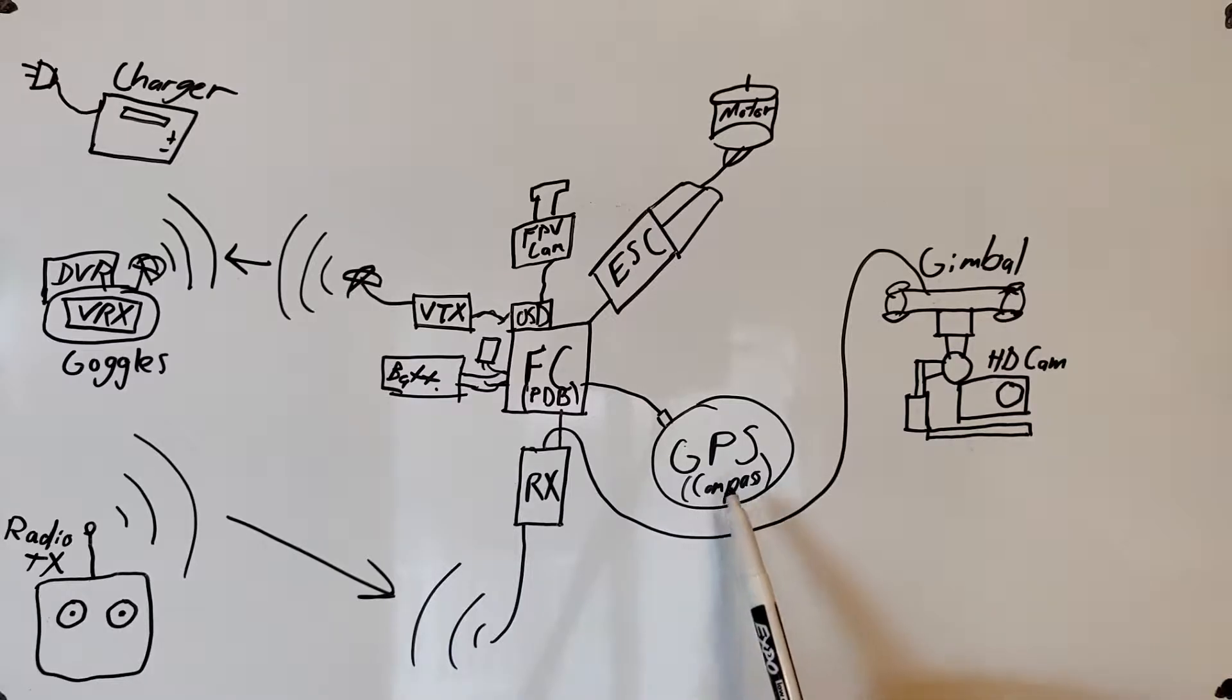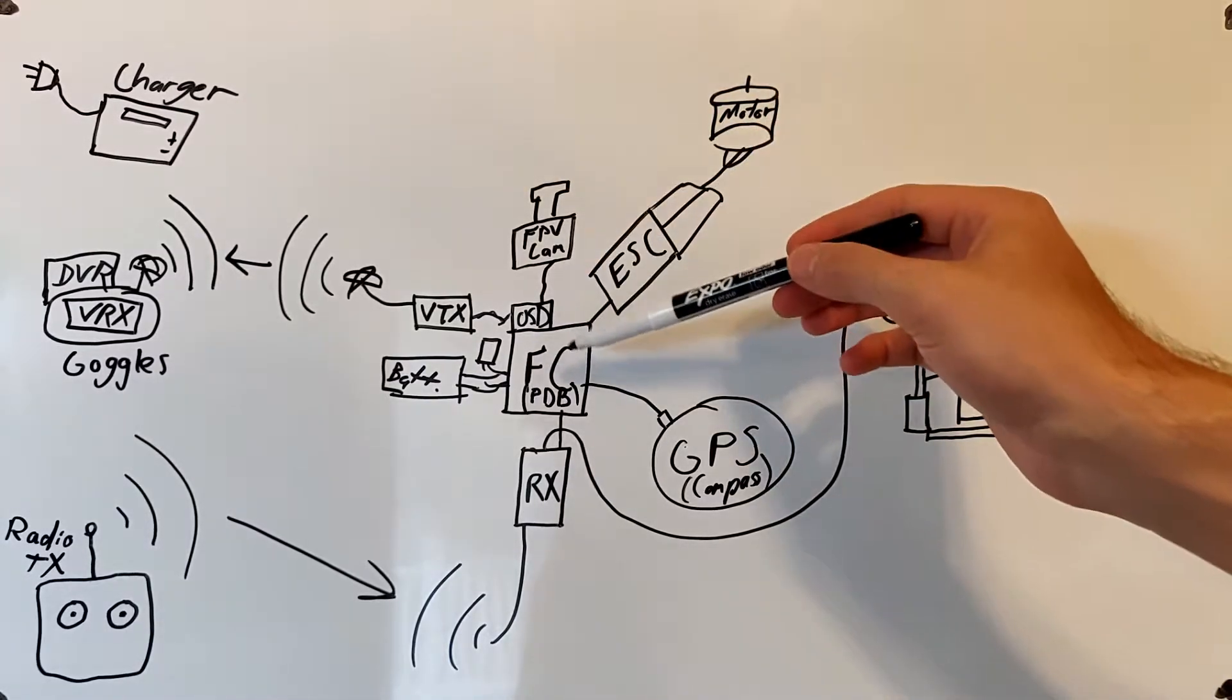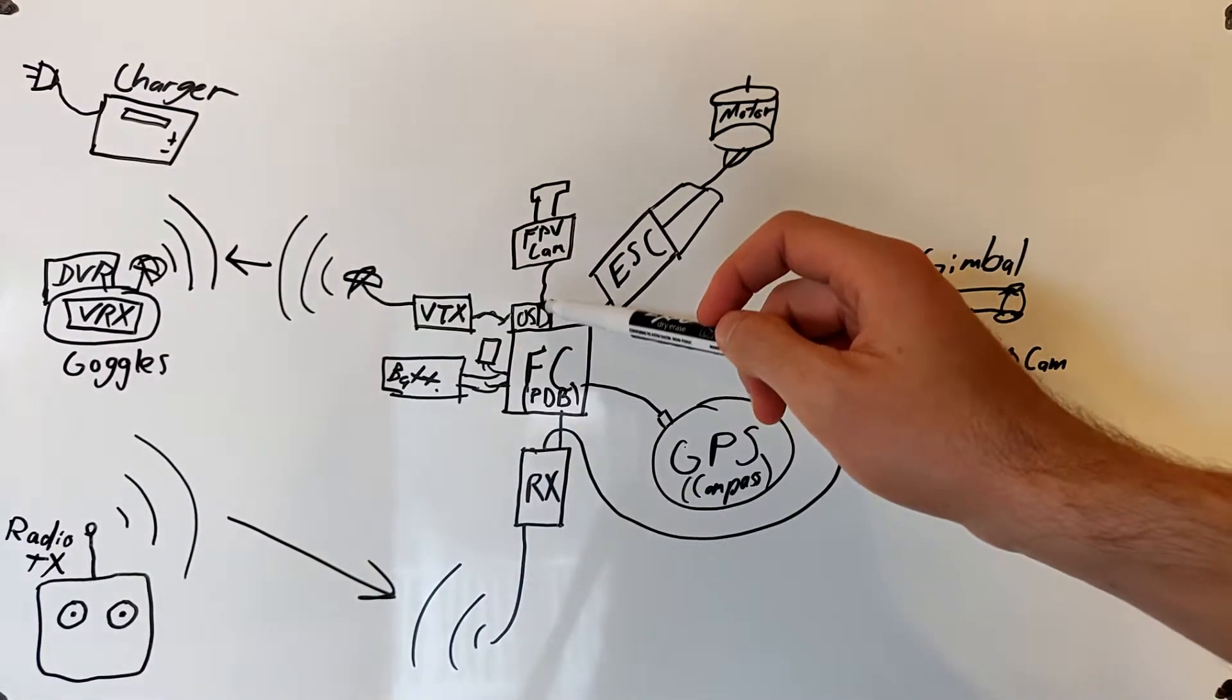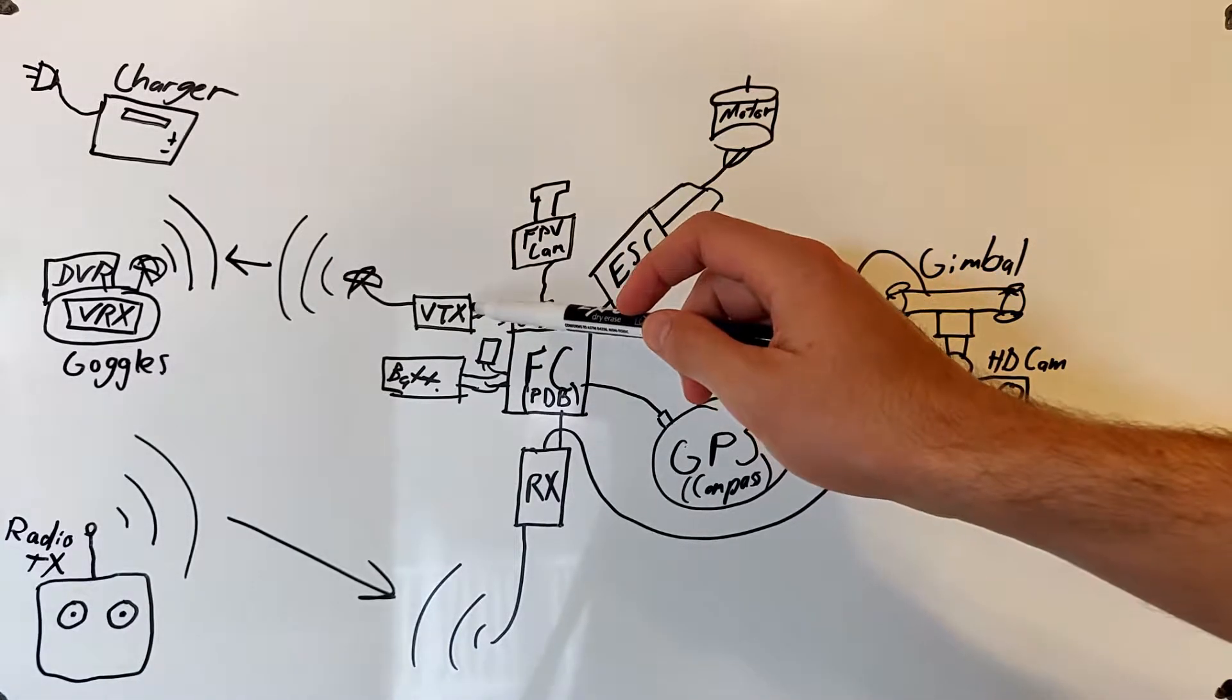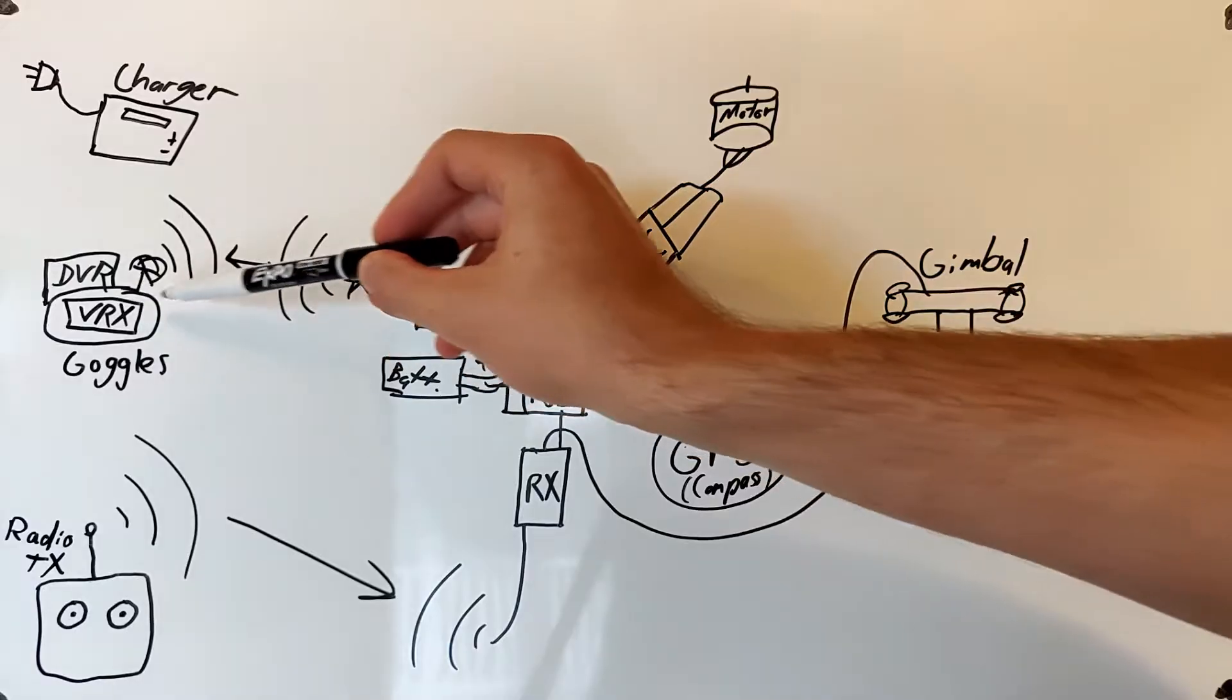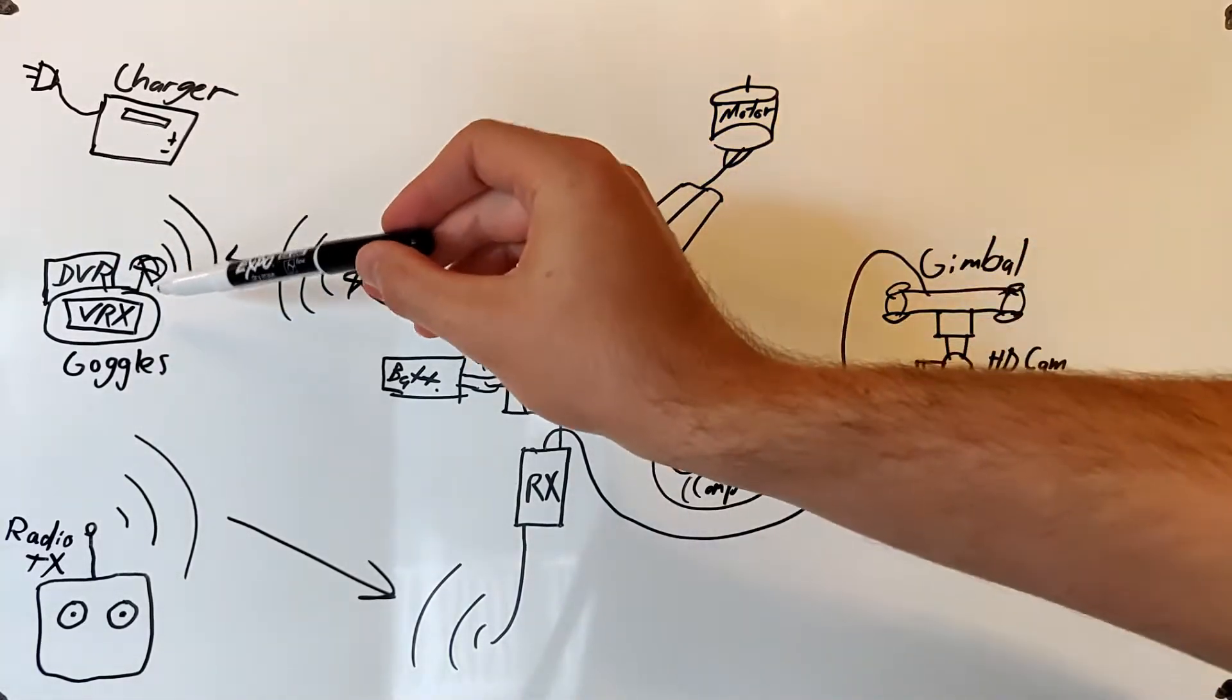The GPS usually also has a compass module. This sends location data to the flight controller and also heading data. The first person view camera will take video from the quadcopter in real time and send it to the flight controller which has a built-in on-screen display. What the on-screen display does is it takes flight data and overlays it on the video so we can read it in real time. It takes this video with the overlaid information and sends it to the video transmitter which transmits it through the air which is received by our VRX or video receiver also known as goggles so that we can monitor it. You can also have a DVR or digital video recorder if you want to save that real-time footage.